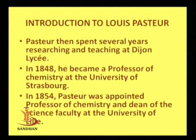Louis Pasteur was born in December 1822 in France. He first did his BA in 1840, then his BS in 1842, followed by his PhD in 1847 in Paris. He spent several years researching and teaching at Dijon-Lycy, became a professor of chemistry at the University of Strasbourg in 1848, and was appointed professor of chemistry and dean of science faculty at the University of Lille in 1854, where he started his research.